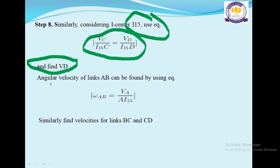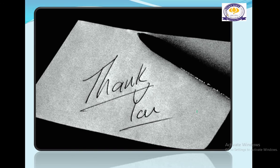Angular velocity of link AB can be found using the equation: omega AB equals VA divided by AI13. Similarly, find velocities for links BC and CD. With this, we have come to the end of this lecture. Thank you everyone.